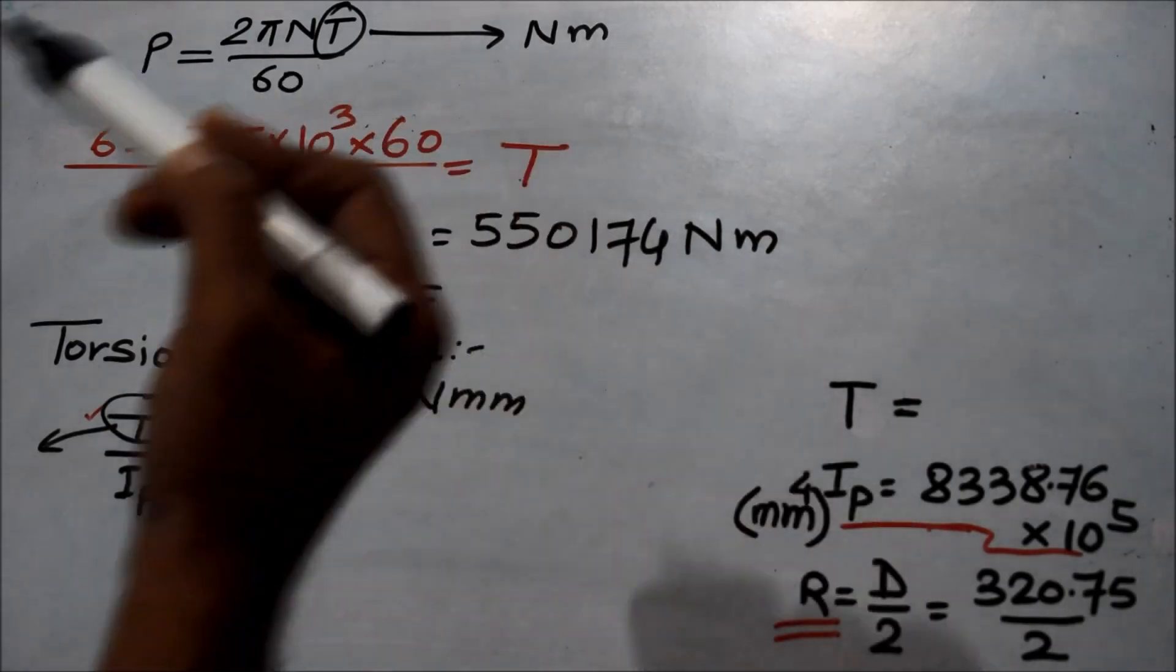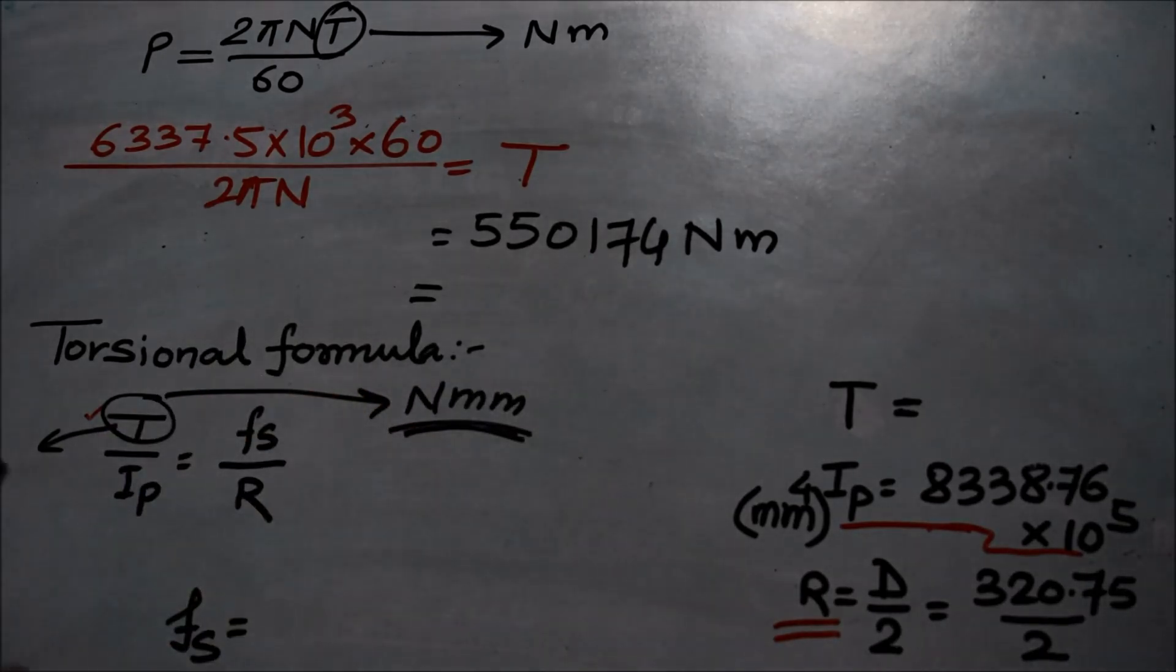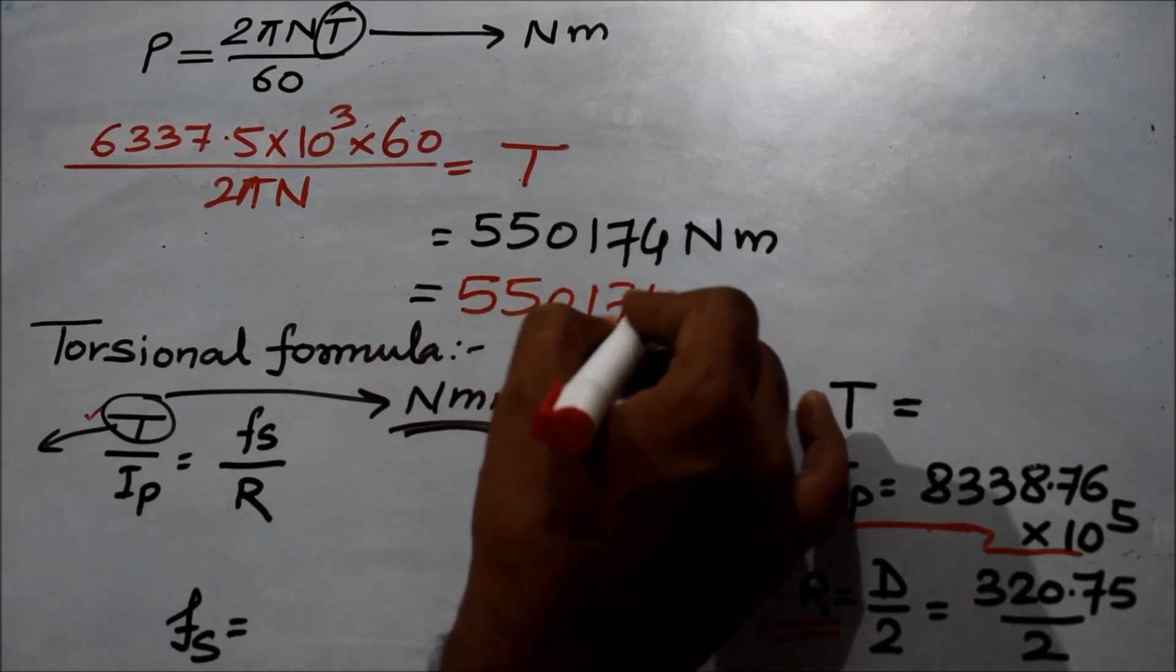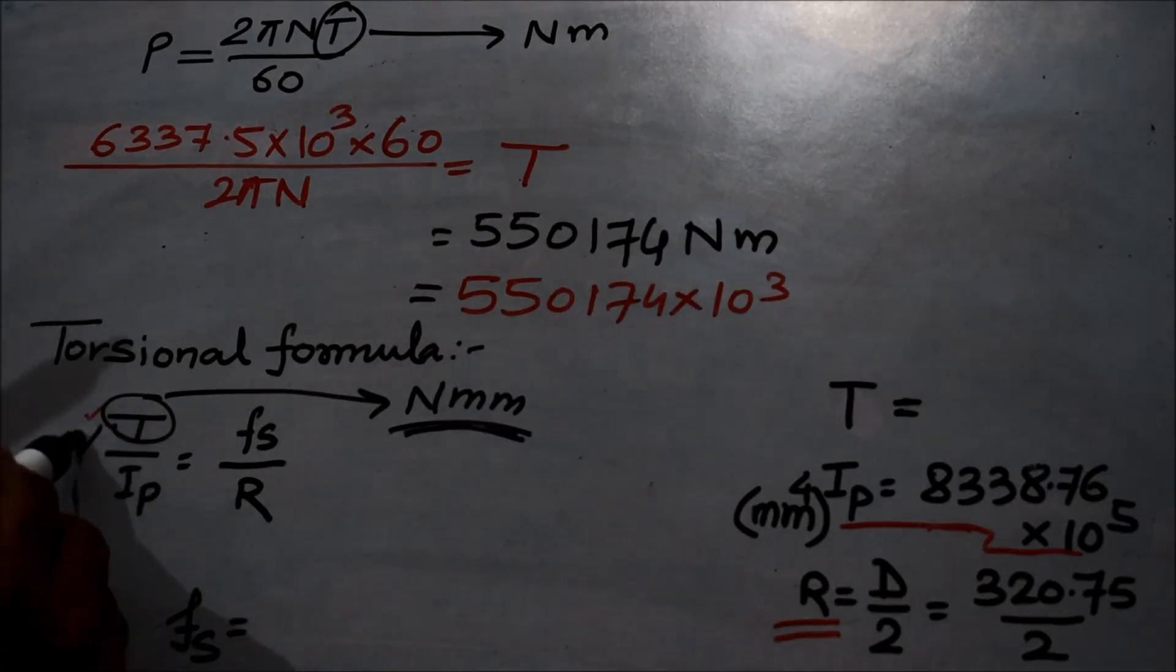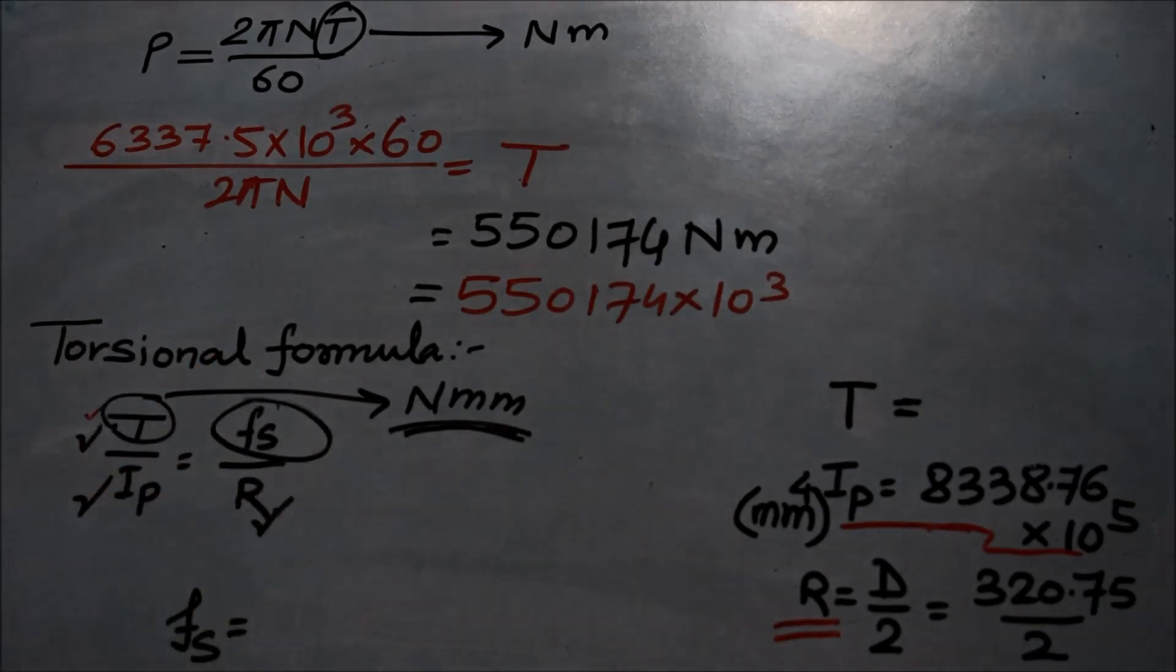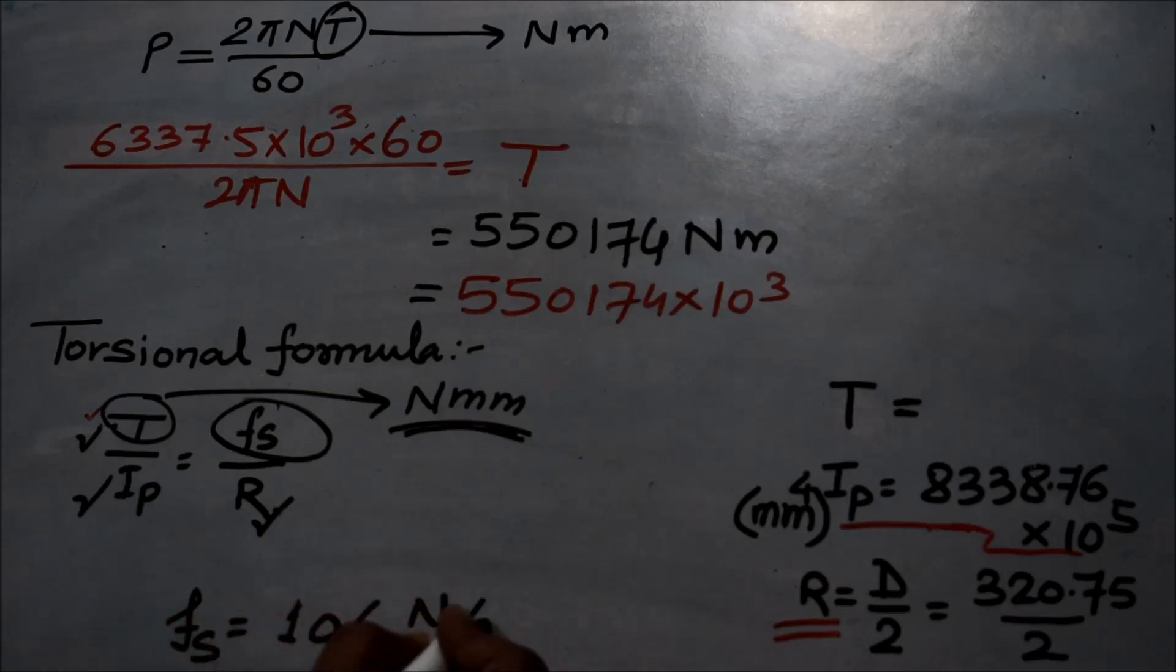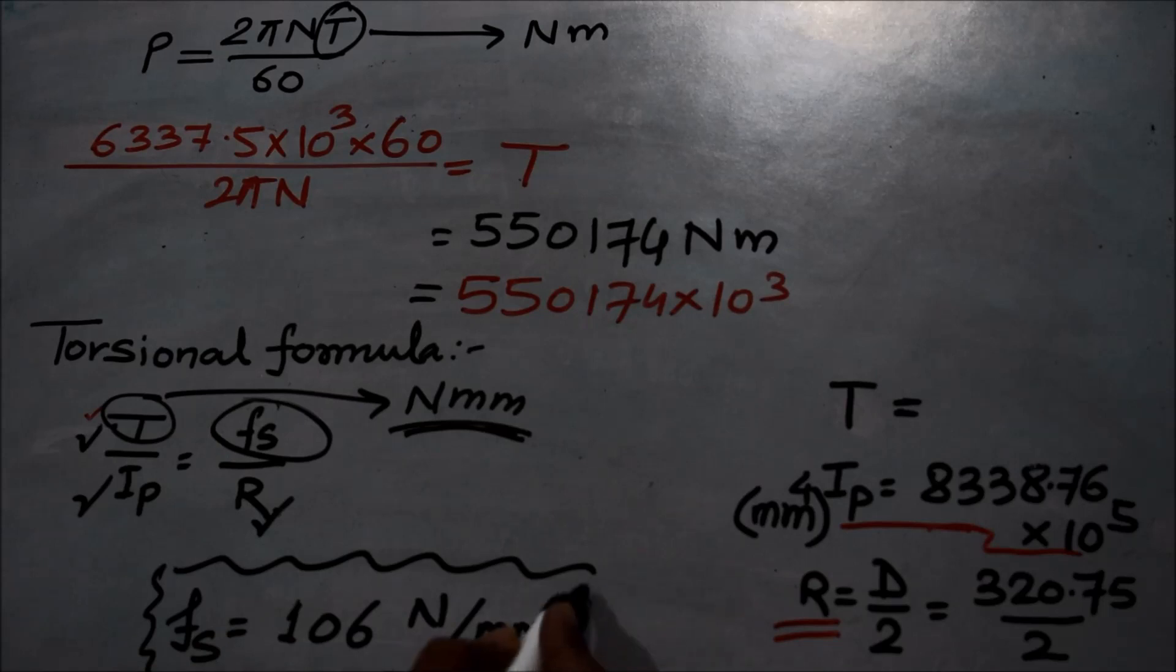I would like to convert this torque and put it into this formula. I want it to be in Newton mm, for that I will multiply it with 10 raised to 3, so it becomes 550,174 into 10 raised to 3. I know the value of T, I know the value of Ip, and I know the value of R, so there is only one unknown left: Fs. If you calculate, you will find the value of Fs to be 106 Newton per mm square. That is the amount of shear stress that will get produced in this propeller shaft under the conditions wherein the shaft power is 6337.5 into 10 raised to 3.